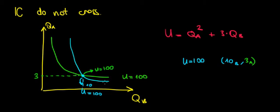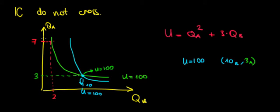But look at what happens on the other indifference curve — we actually have more bananas. For a given level of apples, let's call it 7 kilos of apples, we used to have 2 kilos of bananas, but now on the blue indifference curve we have 5 kilos of bananas for the same 7 kilos of apples.